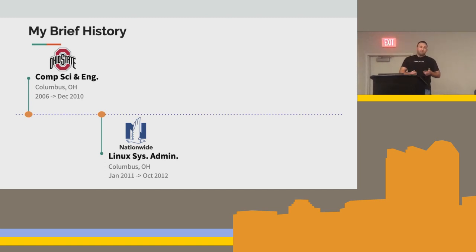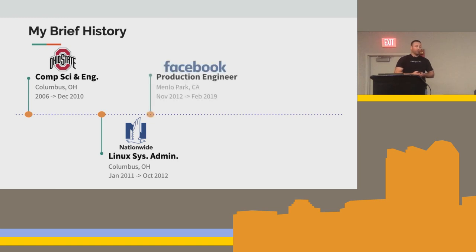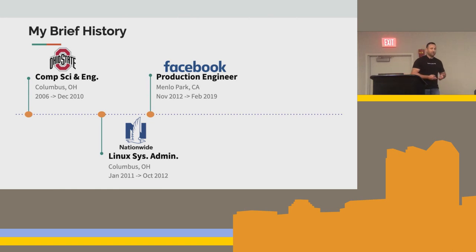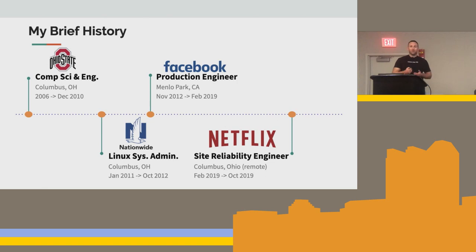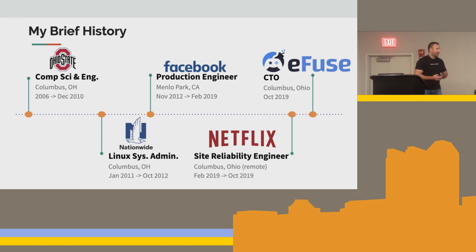Things were going really well until September 2012, when I got hit up by a recruiter on LinkedIn from Facebook. They asked me if I wanted to interview — I didn't think I had a chance in hell at getting the job. But after seven interviews and two flights out to Menlo Park, California, I ended up accepting the role. I spent the next few years at Facebook as a production engineer. Earlier this year I wanted to make my way back to Ohio, so I joined Netflix as a site reliability engineer on the CDN team, making sure videos get delivered to your phone or TV really quickly. Last month I decided to make a move again and joined a startup here in Columbus called eFuse.